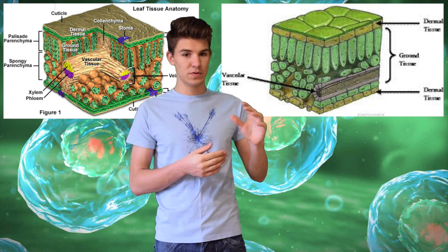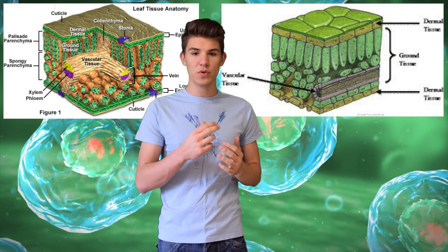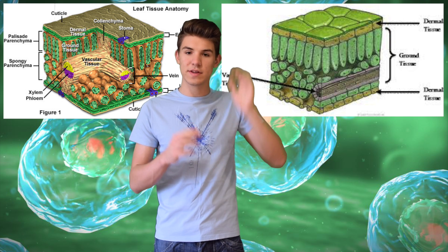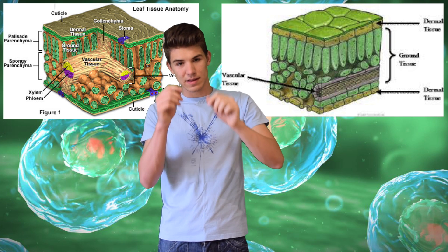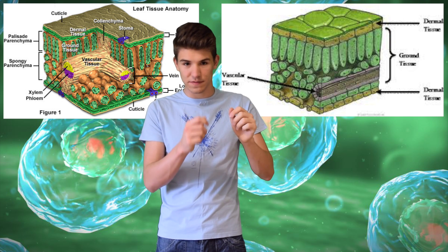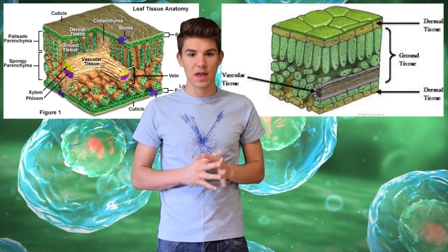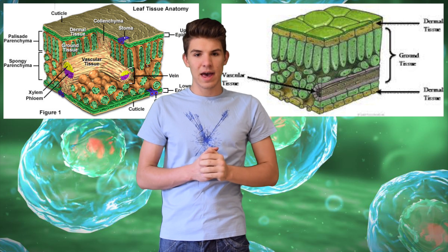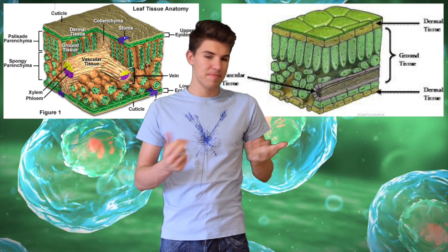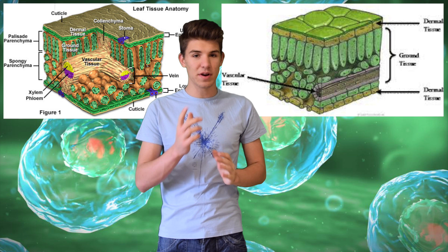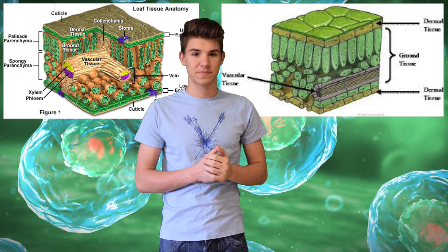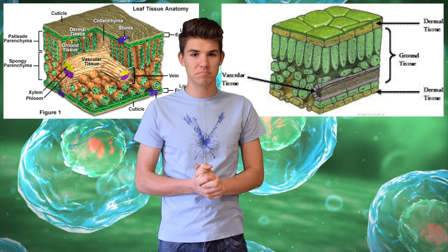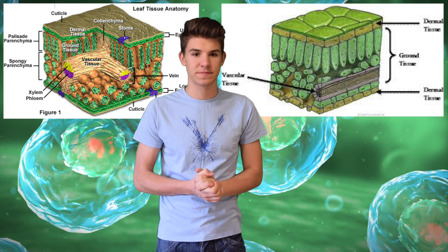Collenchyma tissue supports young stems, roots, and petioles. Petioles are the part that joins a leaf to the stem. This is a collenchyma cell right here, and they make up the tissue. They generally lack chloroplasts because they aren't made for photosynthesis.